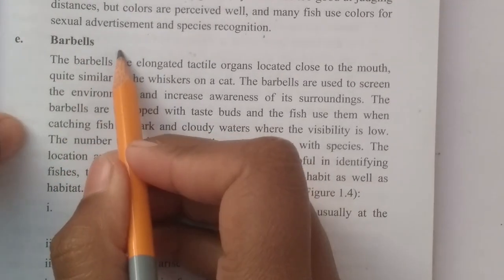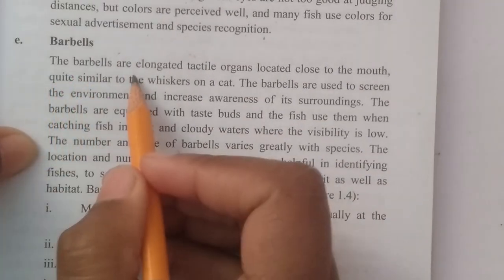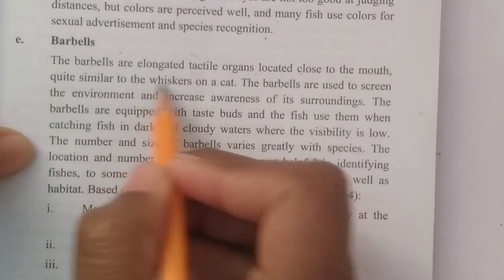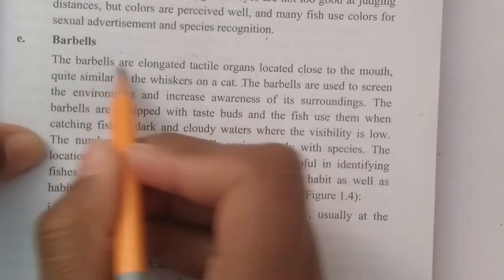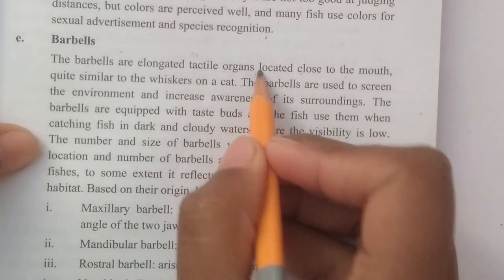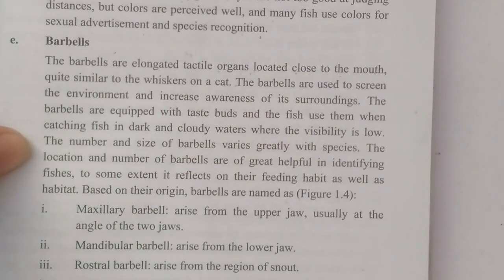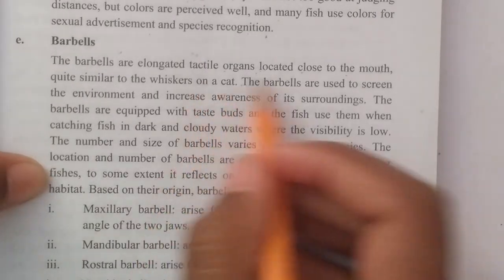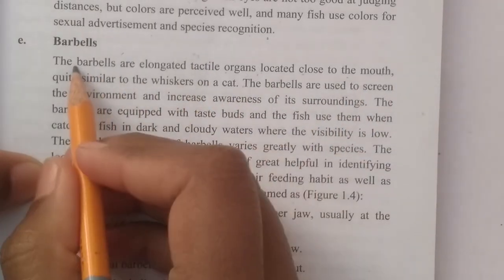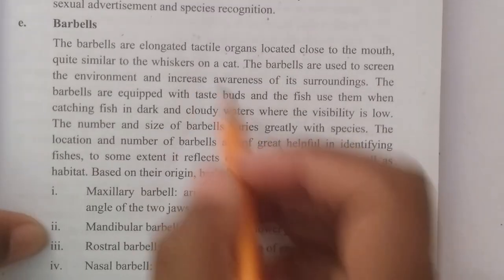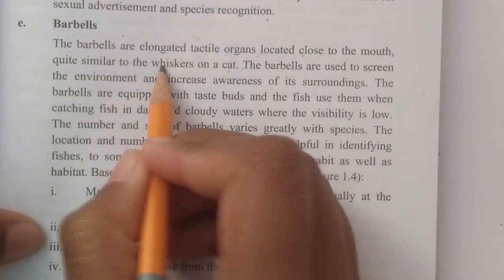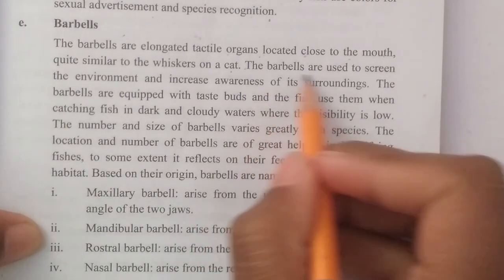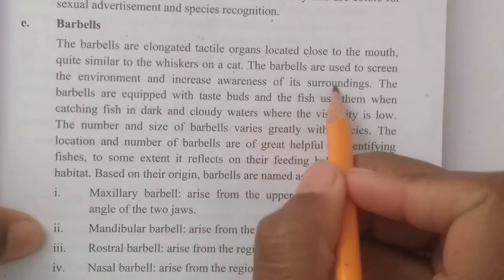Barbels are elongated tactile organs located close to the mouth, quite similar to the whiskers on a cat. They are used to sense the environment and increase the awareness of their surroundings.